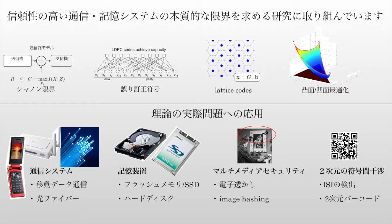Information theory is the application of beautiful mathematics to very practical problems. Our central research problem is how to communicate reliably over unreliable communications channels and to find the fundamental limits of those channels. The mathematical tools we use include the Shannon limit, error correcting codes, lattice codes, and convex optimization. We're also interested in applying those tools to practical problems such as wireless communications, data storage, multimedia security, and two-dimensional inter-symbol interference.